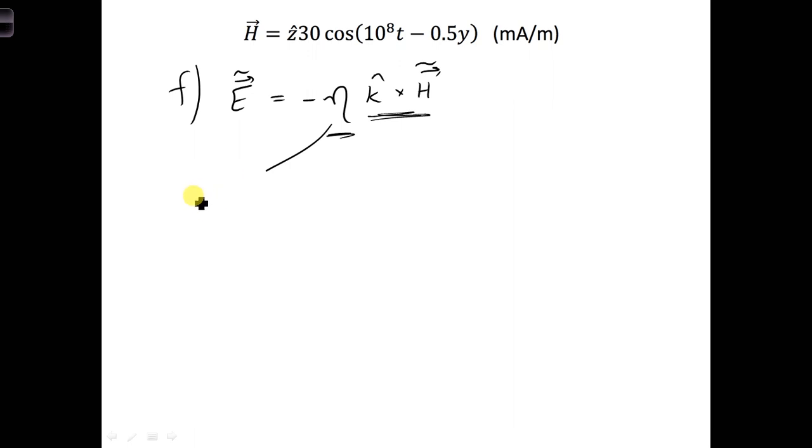Eta, the characteristic impedance of free space, is mu over epsilon. We just solved for epsilon and we have mu, so if we plug in our values, we'll get 251.33 ohms.